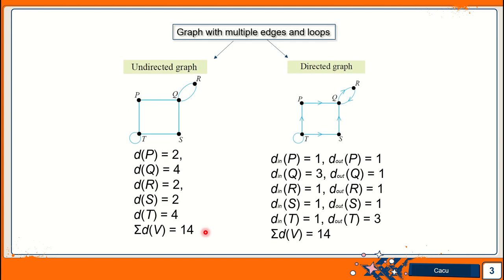Now we look at the next graph, which is about the graph with multiple edges and loops. We also have undirected graph and directed graph for this graph. First, we look at the undirected graph. The degree for P is 2, degree for Q is 4, degree for R is 2, degree for S is 2, degree for T is 2, and the loop here counts as 2, so altogether T's degree is 4. Therefore, the total sum of degrees for all vertices is equal to 14.